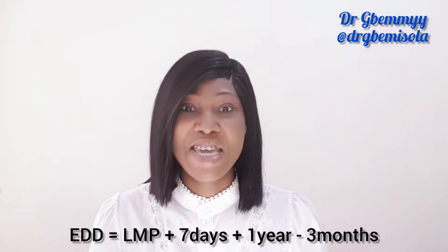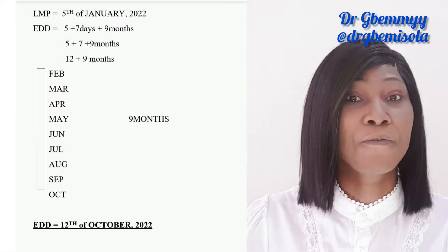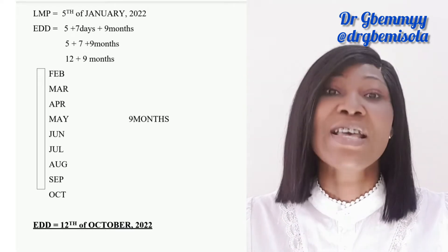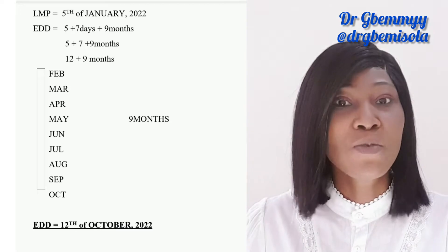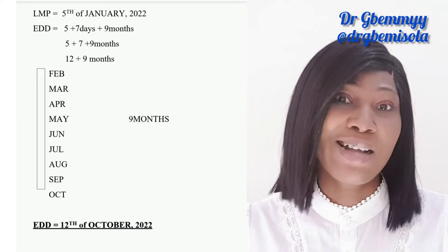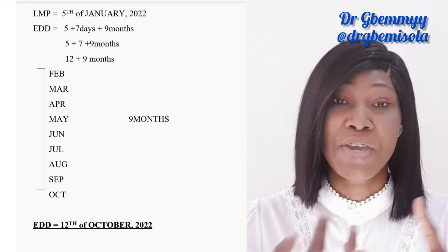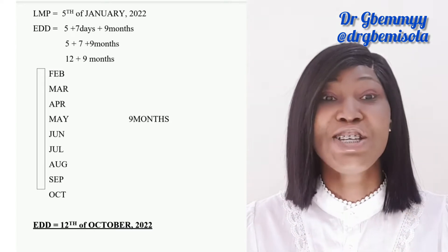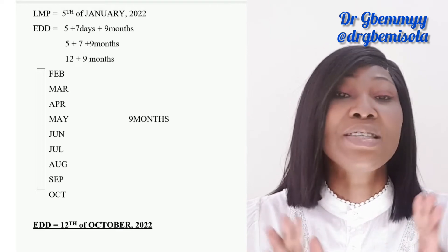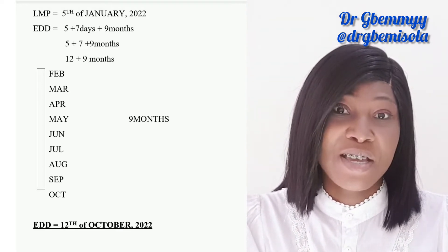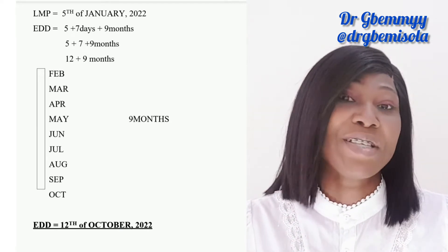The formula is: LMP plus seven days, plus one year minus three months — or basically LMP plus seven days plus nine months. So with 5th of January 2022: 5 plus 7 days equals 12, plus nine months. Counting nine months from January: February, March, April, May, June, July, August, September, October. So her EDD would be 12th of October 2023.